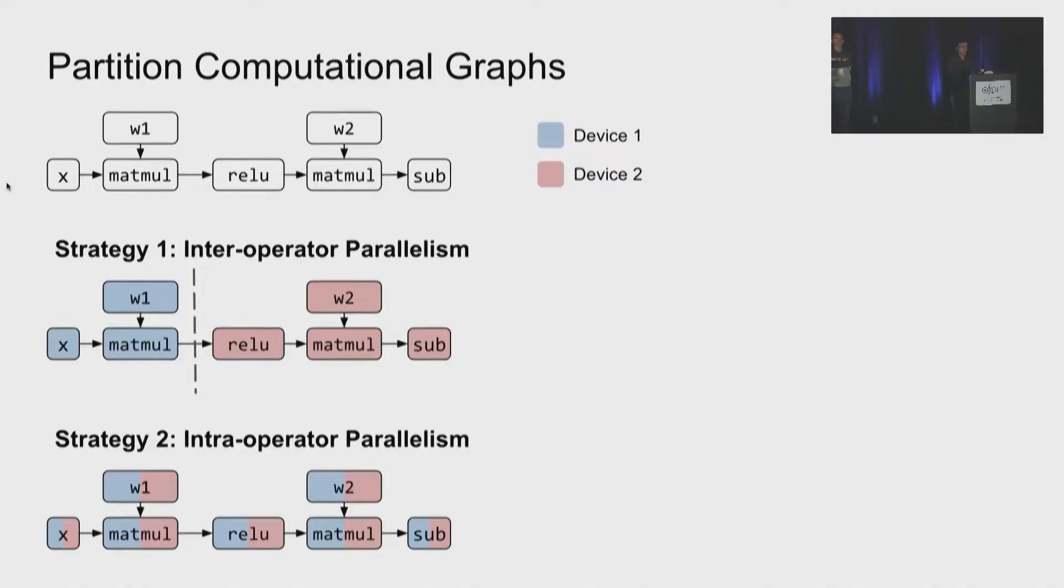Instead of partitioning at the graph level, we can partition each operator. We can partition each operator and let different devices work on different regions of the same operator. This makes all devices busy, but it leads to more frequent communication because the devices have to sync after one operator if the next operator cannot preserve the previous partition. So in summary, this page shows two basic patterns of partitioning a graph. As I just mentioned, there are trade-offs between these two kinds of parallelism.